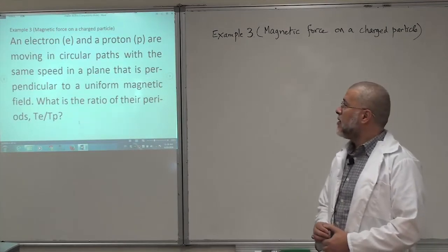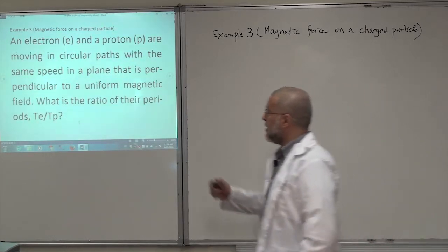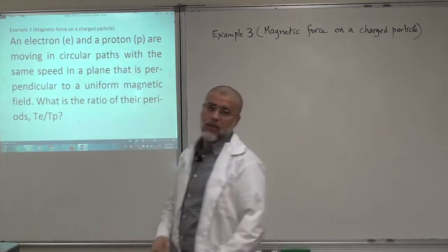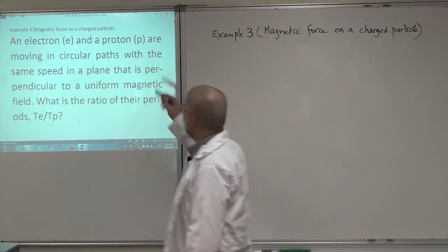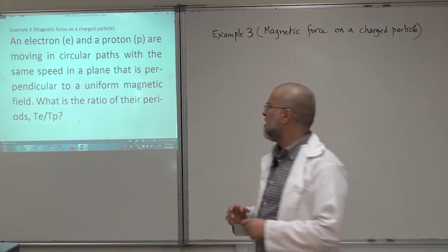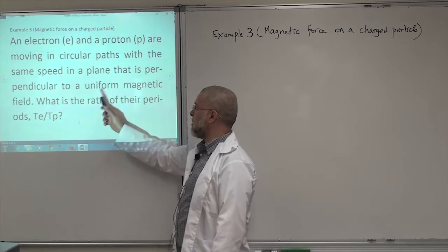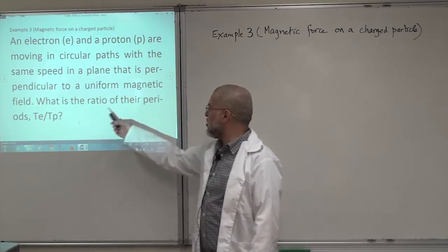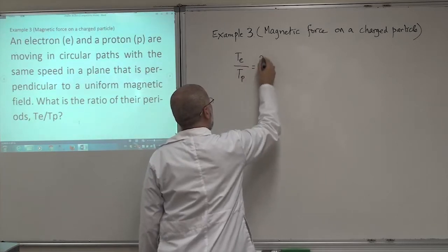This is the last example related to the magnetic field on a charged particle. It says an electron (E) and a proton (P) — the electron and proton have the same charge in magnitude, but the electron charge is negative and the proton charge is positive — are moving in a circular path, which means the velocity and the magnetic field are perpendicular to each other, with the same speed in a plane perpendicular to the uniform magnetic field. What is the ratio of their periods, Te over Tp?